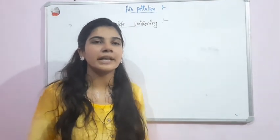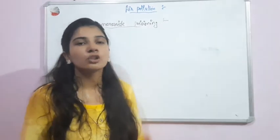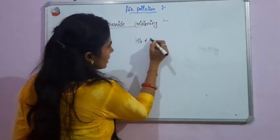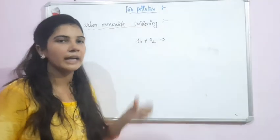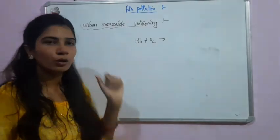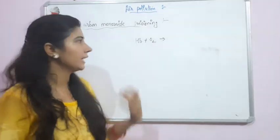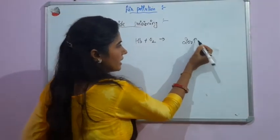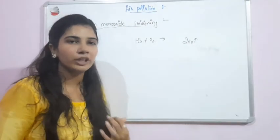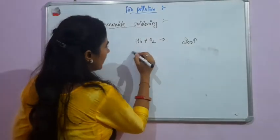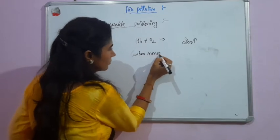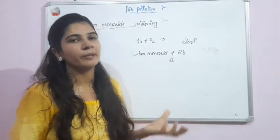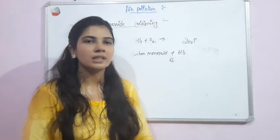What happens when carbon monoxide increases in the atmosphere? Hemoglobin is the respiratory pigment whose function is to bind oxygen and transport it to various parts of the body. But carbon monoxide is 200 times more efficient at binding with hemoglobin. When we breathe in carbon monoxide, it enters our body and binds with hemoglobin, causing a deficiency of oxygen, which can even lead to death.